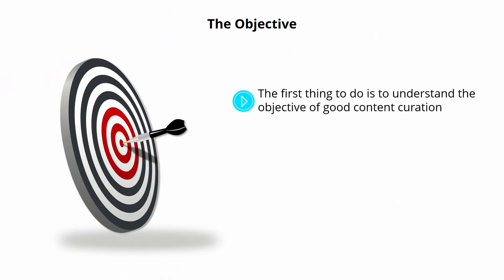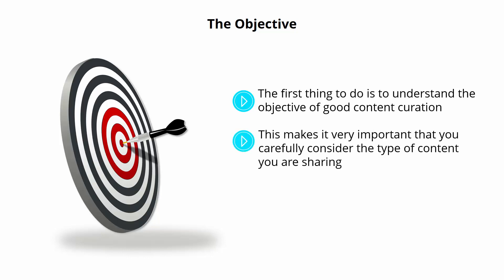The first thing to do is to understand the objective of good content curation. Your aim here is to create a blog post that provides several times the value of a conventional blog post, because it combines the best parts of many posts into a single resource. This makes it very important that you carefully consider the type of content you are sharing.